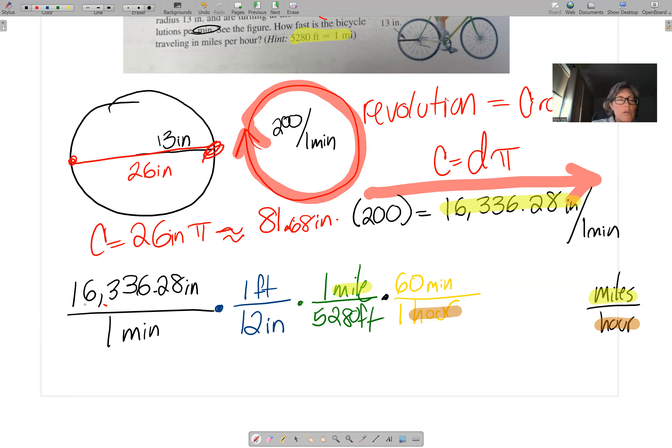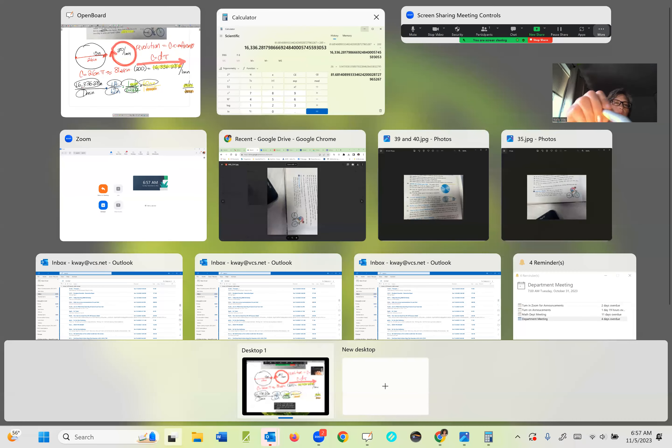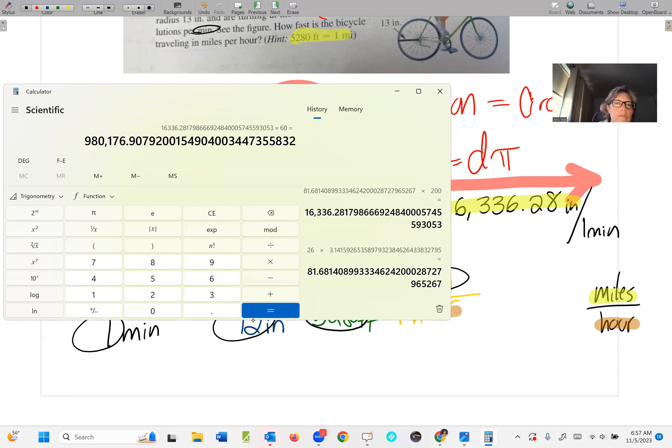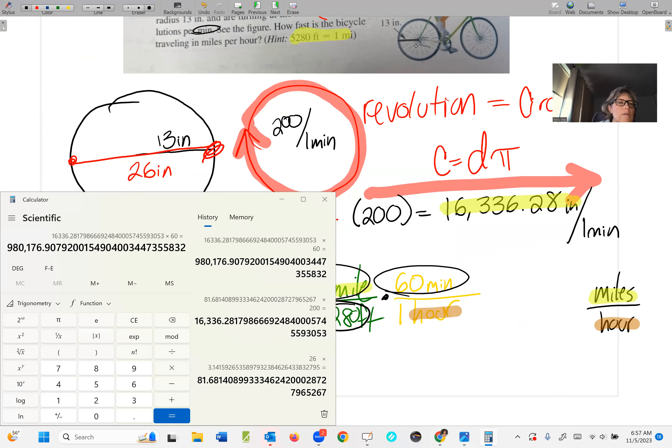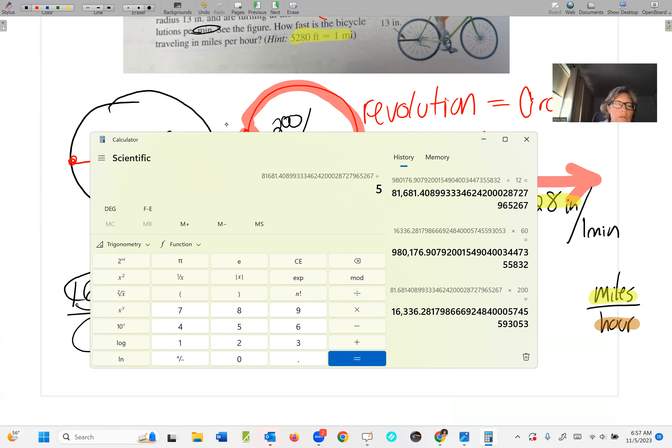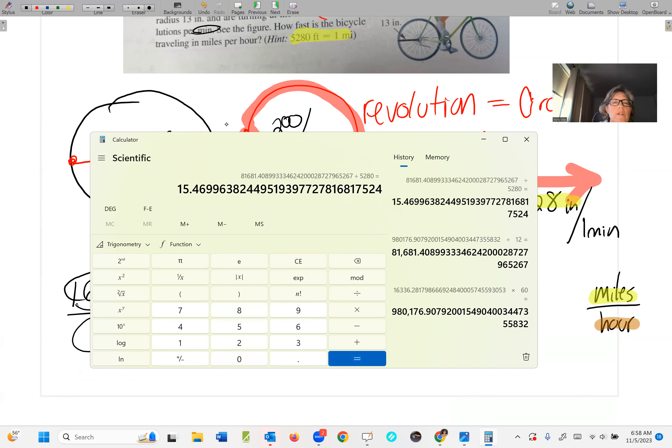At this point, you simply do the math. So I'm going to take this number, times by that number, times by that number. And I'm going to divide by all of these numbers. So we're going to start with that 16,000, which is still in my calculator. We're going to times by 60. And I'm going to divide by... Well. And then divide by 5,280. And we are going 15.47 miles per hour.